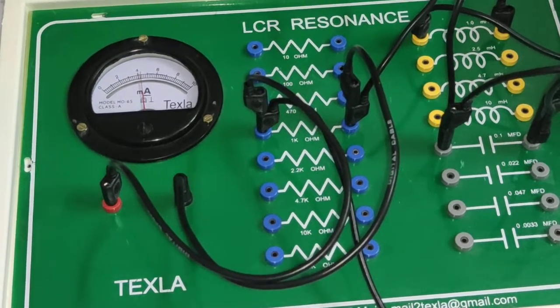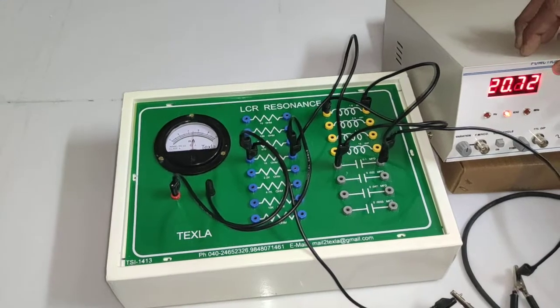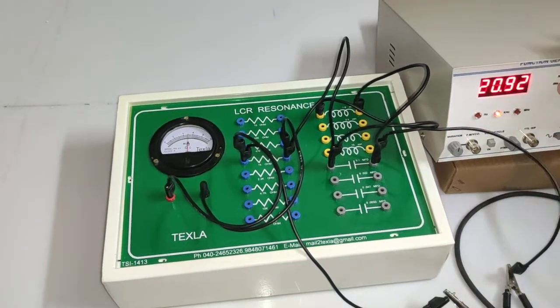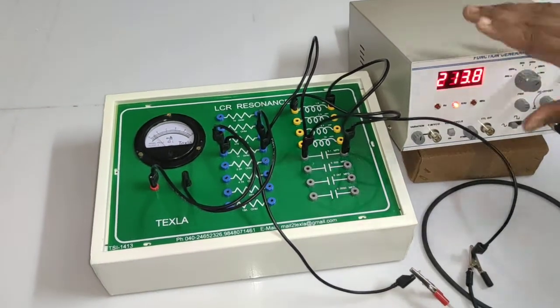So again it is coming back, 4 millihenry, 4 milliamps, 18.75. 5 milliamps, 20.72. Like that you have to take a reading. So again, so again I'm going for another selection. You can even go for another selection, it will be same thing.